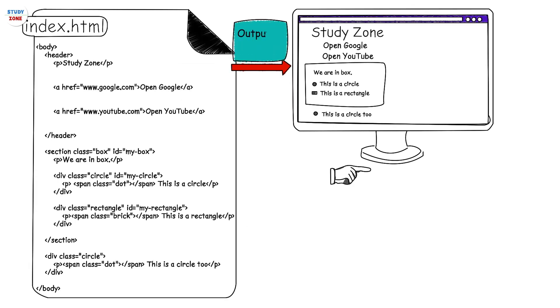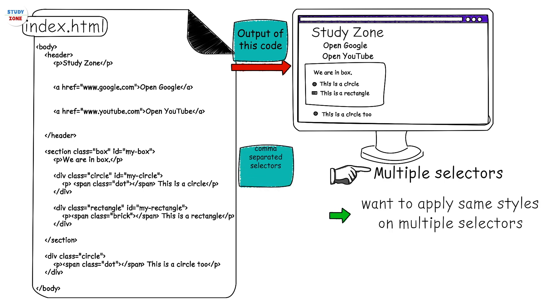Let us start with multiple selectors. If you want to apply same styles on multiple selectors, you can write comma-separated selectors. For example, .circle, .rectangle { color: red; } will apply red color to text of all elements that have either class circle or class rectangle.